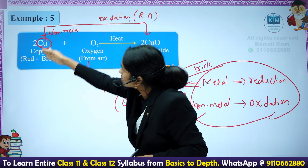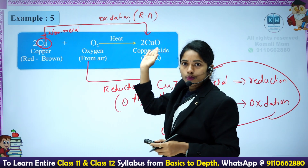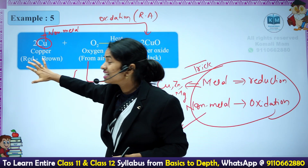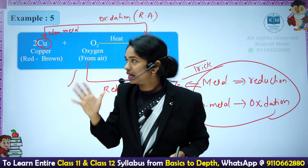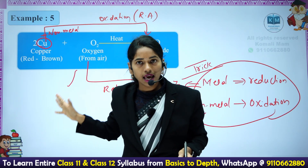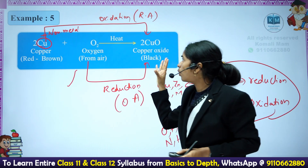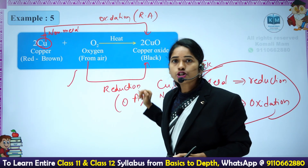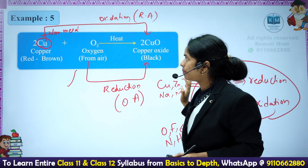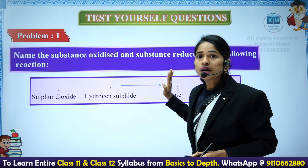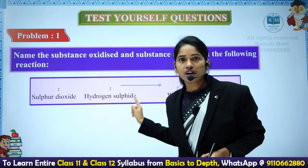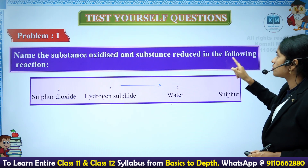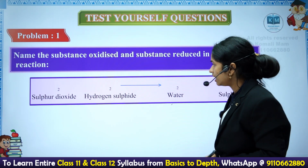O2 is oxidizing Cu into CuO — that is why O2 is the oxidizing agent. Copper, which is a reddish-brownish metal, when you do combustion in air, converts into a black colored substance called copper oxide. Now here are some questions for you — please try these questions. Name the substance oxidized and the substance reduced in the following reactions.